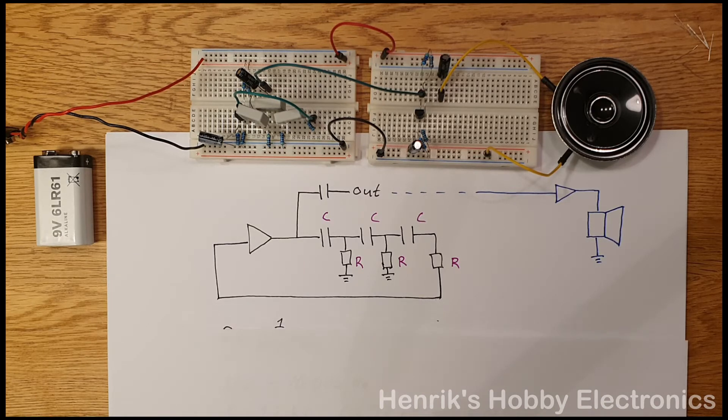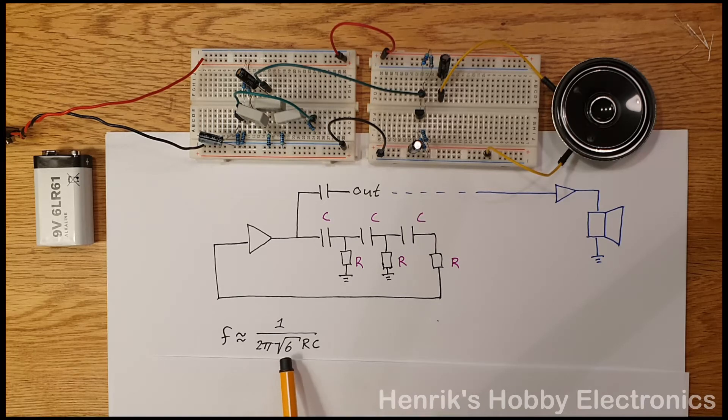Now there's a simple equation that we can use to calculate the frequency of oscillation. The frequency is approximately equal to 1 over 2π times the square root of 6 times RC. For those of you who are interested in these details, specifically where this factor square root of 6 comes from, I will leave some useful references down below.